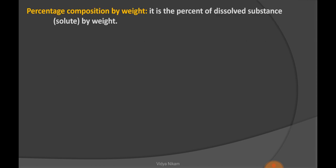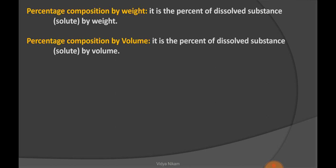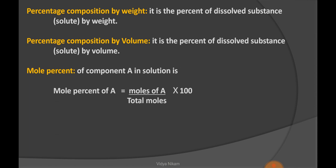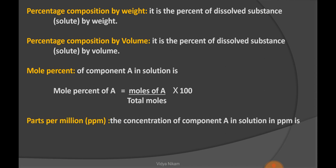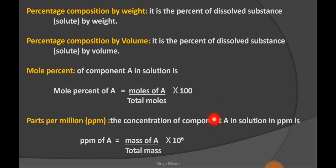Next point is percentage composition by weight — it is the percentage of dissolved substance (solute) by weight. Percentage composition by volume is the percentage of dissolved substance (solute) by volume. Mole fraction of component A in solution is calculated as moles of A divided by total moles, multiplied by 100. Parts per million (ppm) concentration of component A in solution is calculated as: ppm of A = (mass of A / total mass) × 10⁶.